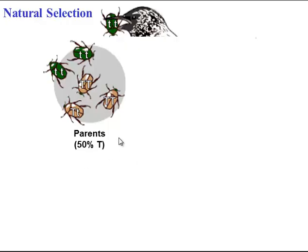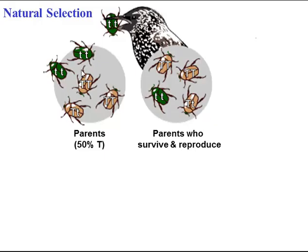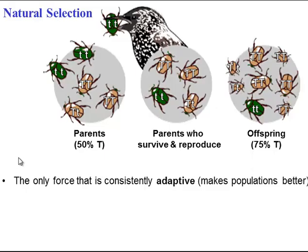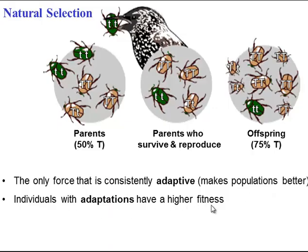Natural selection happens when you have a selecting agent, such as a predator, that makes some phenotypes more adaptive than others. Here the tan phenotype is more adaptive. In the parental population we start with 50% dominant T allele, but some with the recessive phenotype are eaten. The parents who survive and reproduce produce offspring with a higher frequency — 75% — of the dominant allele. This is evolution, and it is the only evolutionary force that is adaptive, making populations better suited to their environment.